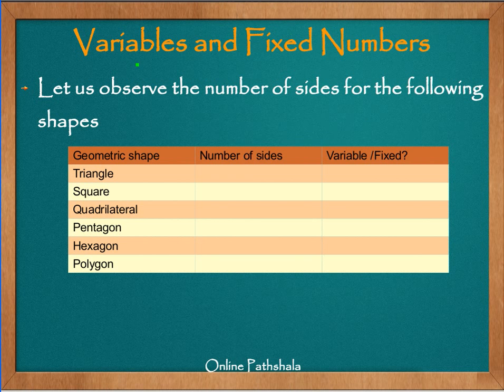Having discussed that, I will give you an example by which you will be able to appreciate the difference between a variable and a fixed number. In order to do that, we will take a simple example from geometry. What we have is a table here with three columns, and we are discussing various geometric shapes in the first column. What we are supposed to do is find out the number of sides and figure out whether these number of sides are fixed for this figure or variable.